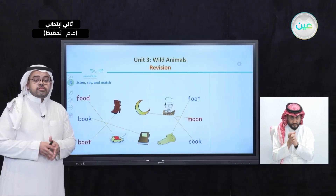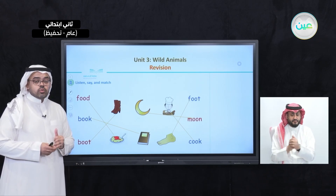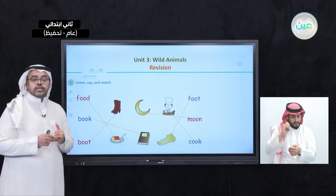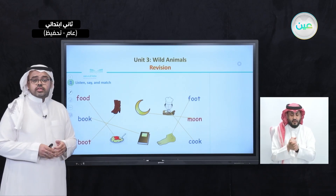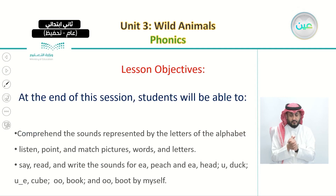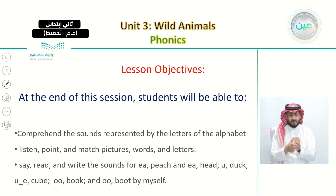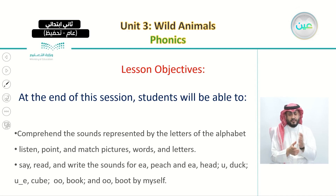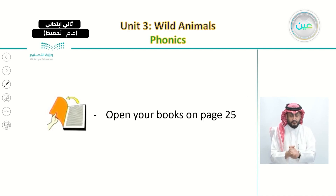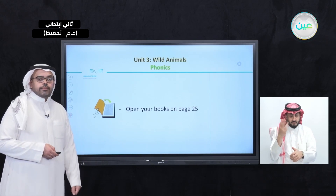We learned different sounds of different letters — sounds with U, different sounds of EA, and different sounds of words with double O. Now let's look at our objectives for today's lesson: we hope you will comprehend sounds represented by letters of the alphabet, listen and point and match pictures, words and letters, and say, read, and write the sounds for EA as in peach and head, U as in duck, UE as in cube, and double O as in book and boot. Please open your books to page 25.